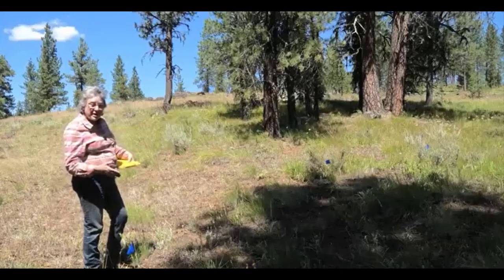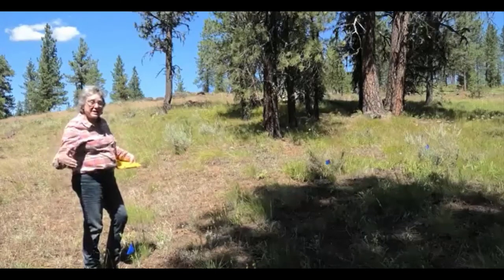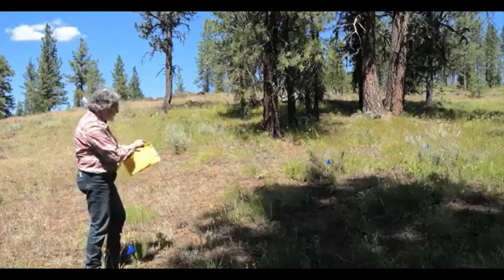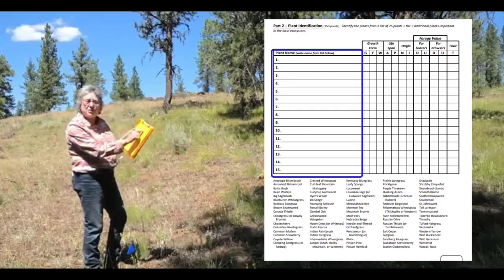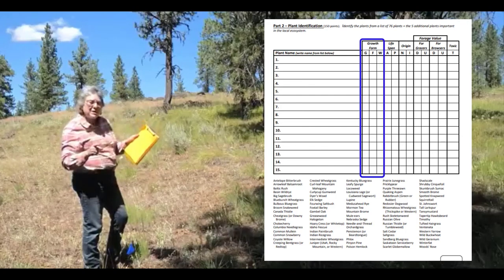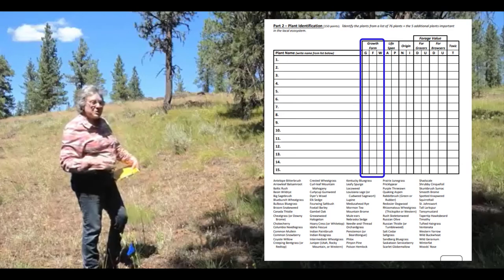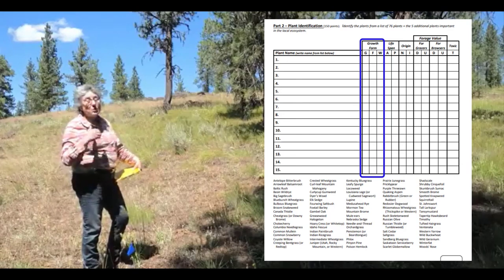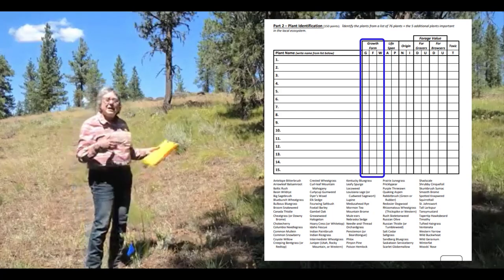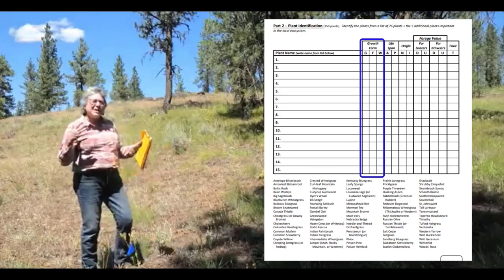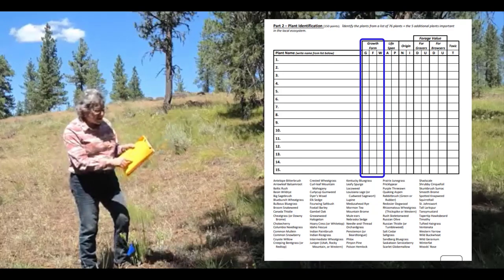All you're going to do is walk in a line. At the beginning of the line there's going to be a poster that says 'Plant ID,' then just go plant to plant, write down the name, and tell us whether it's a grass, forb, or woody plant. That's really important, because if you know which grasses, forbs, and woody plants are out here, that tells you what kind of wildlife might use the site, what the fire regime might be like, and how close it is to its absolute best condition.